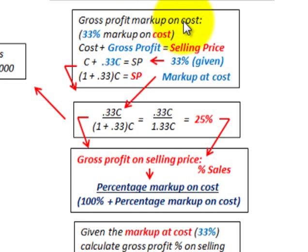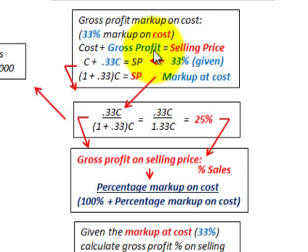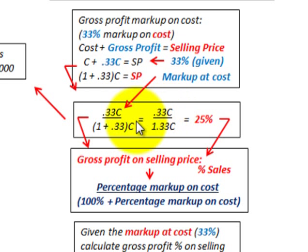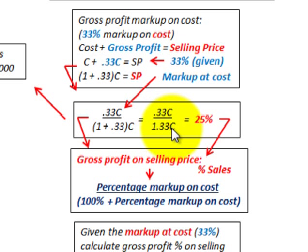Let's look at gross profit on our markup and how we convert gross profit above cost to a percentage of sales. We had a 33% markup on cost, so: cost plus gross profit equals selling price. The gross profit equals 33% of cost. To convert it, we take cost divided by sales price — cost at 33% over sales price at 133% — which equals 25%.